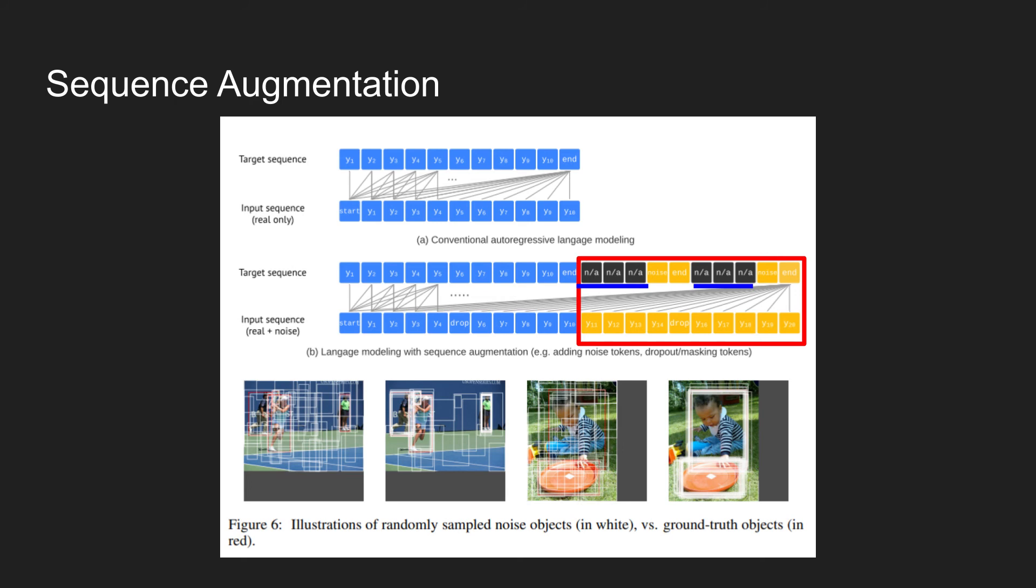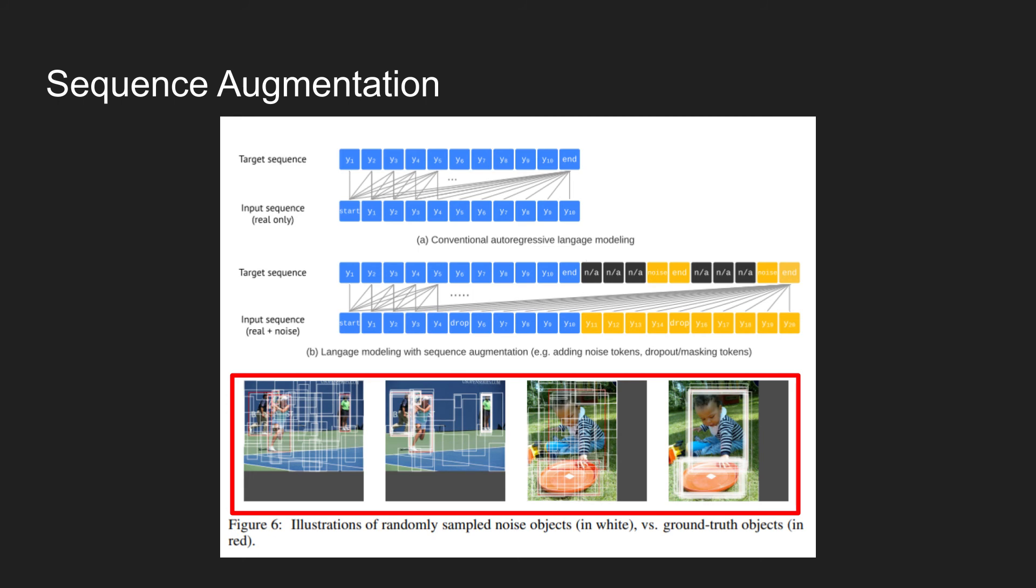This figure 6 right here represents the noise labels added in the image. So the colored boxes are the ground truth and the white boxes are the noise boxes added when training. And adding this noise label in training increases the overall performance of the model.